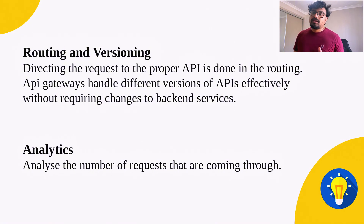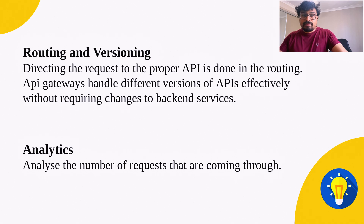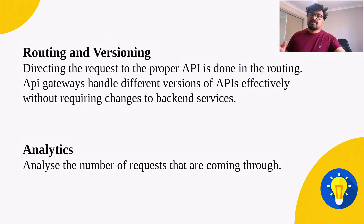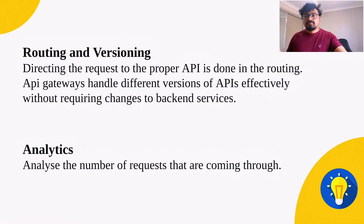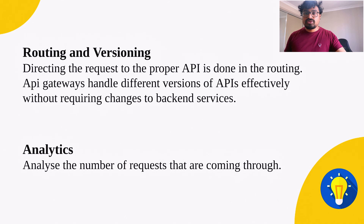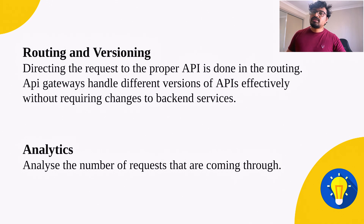The next responsibility is routing and versioning. Popular APIs have multiple versions — for example, the YouTube API has version 1 and version 3. To handle versioning, rather than writing logic inside each API, we can route requests to the correct version from the API gateway since it's the single point of entry. Additionally, analytics becomes easy because all requests pass through the gateway, making it straightforward to analyze traffic and usage.